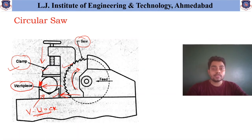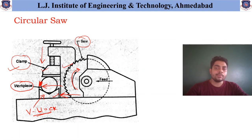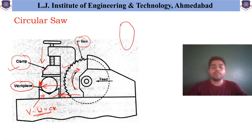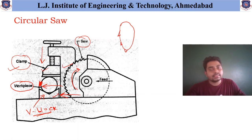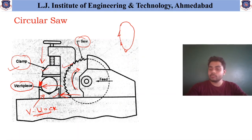So if we summarize: in the case of the hacksaw blade, the arrangement is a straight steel ruler type arrangement. In the case of the band saw, the arrangement is like a ring or strip arrangement — a type of band is available on the periphery of which teeth are available. And similarly, the last one is the circular saw, and in the case of the circular saw, the teeth are available on the periphery of the blade, which helps to remove the material.